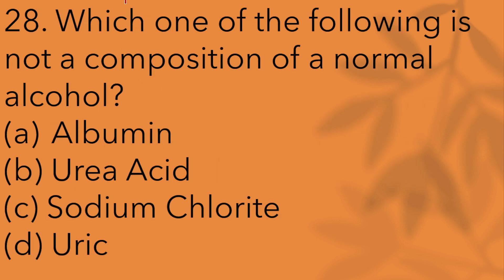Which of the following is not a composition of normal urine? The options are albumin, uric acid, urea, and sodium chloride. These are the constituents found in urine.